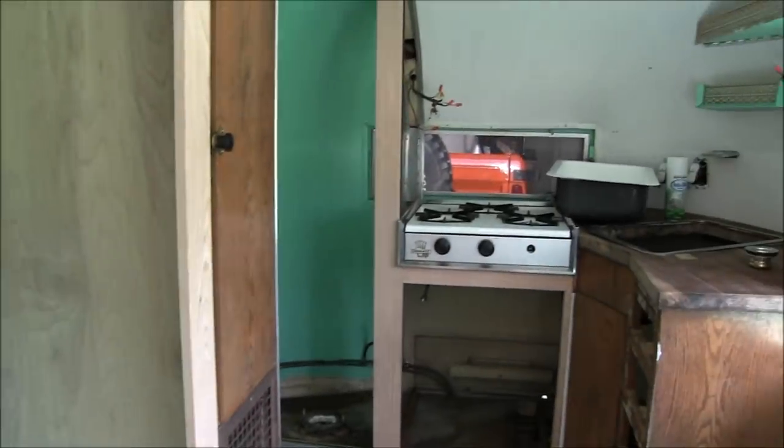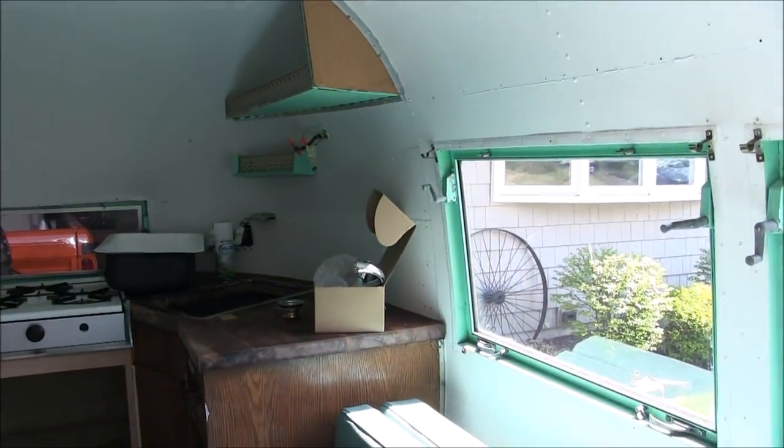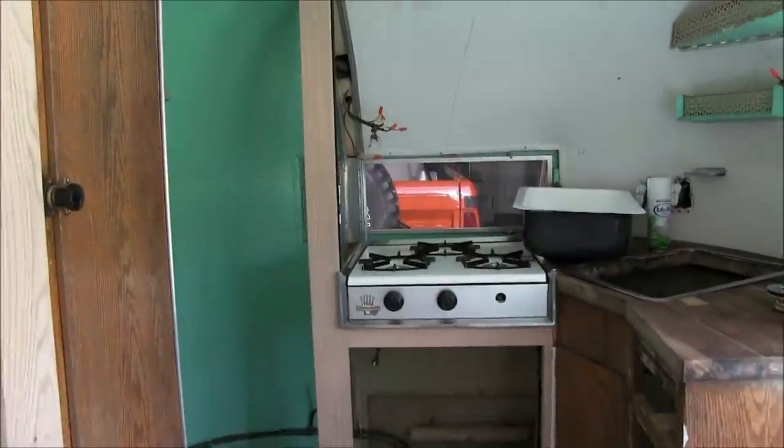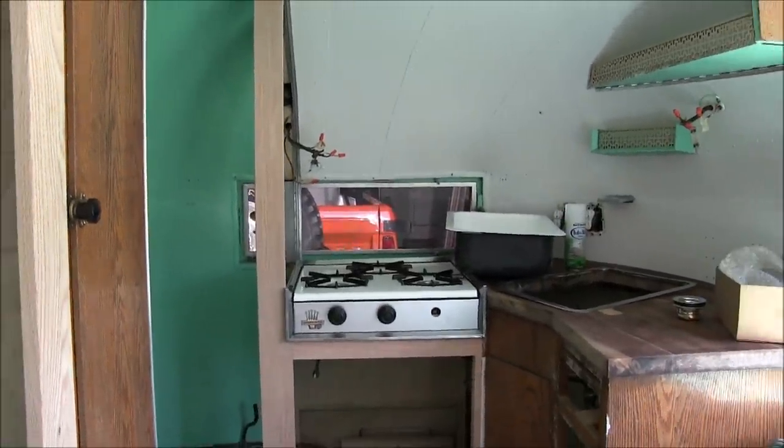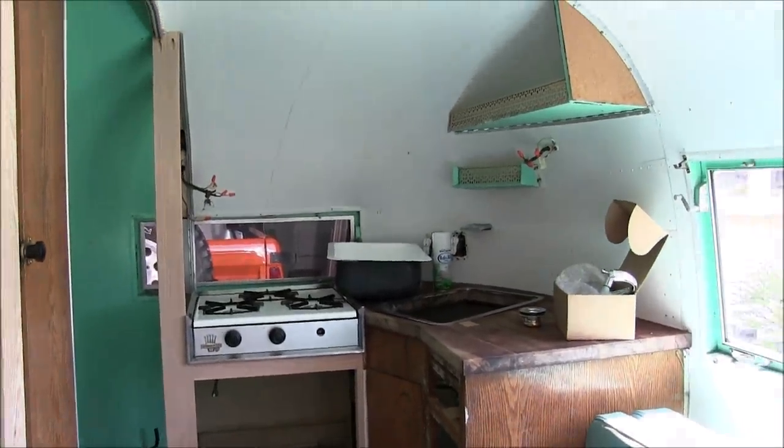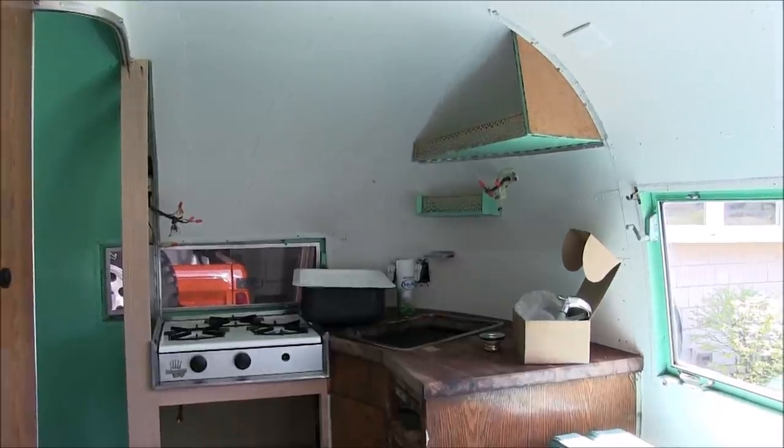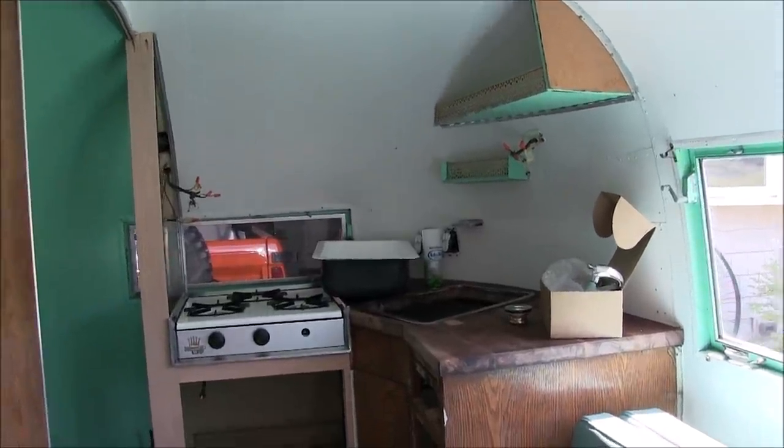And the opposite side of the trailer is road side. On the California Edition Bambi 1961's, the bathroom is on the road side of the trailer and the kitchen will be on the curb side.